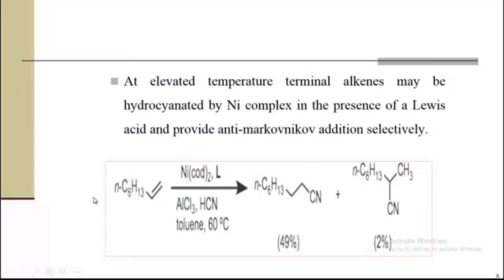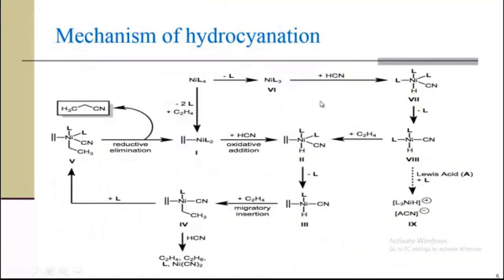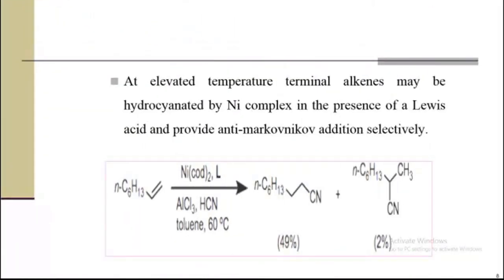During the nickel mechanism, first, when we add HCN, it is possible that another molecule of HCN will react in this step. And it is possible that when we add alkene, we will get C2H6 instead of alkyl nitrile. So there are two mechanism problems during hydrocyanation with nickel. At an elevated temperature, terminal alkyne may be hydrocyanated by a nickel complex in the presence of Lewis acid and provide anti-Markovnikov addition selectively.